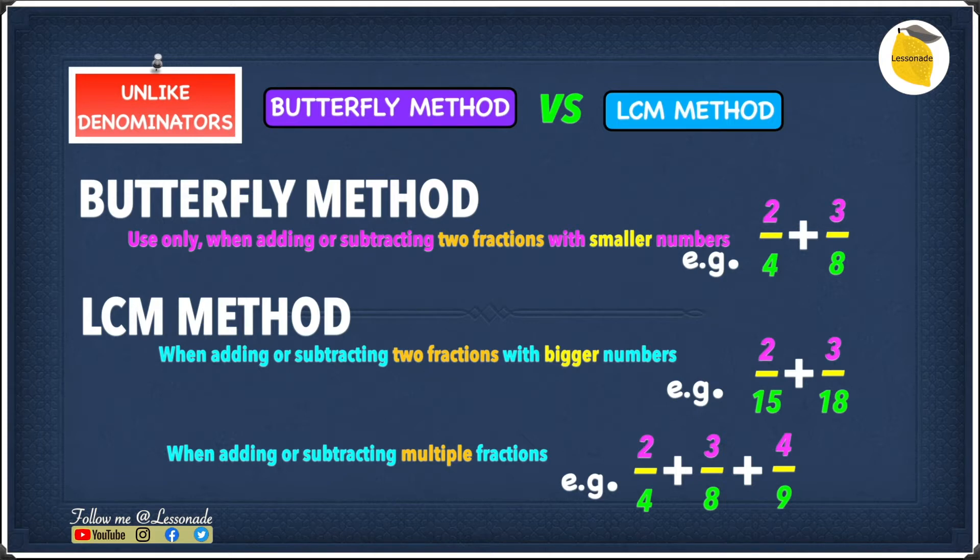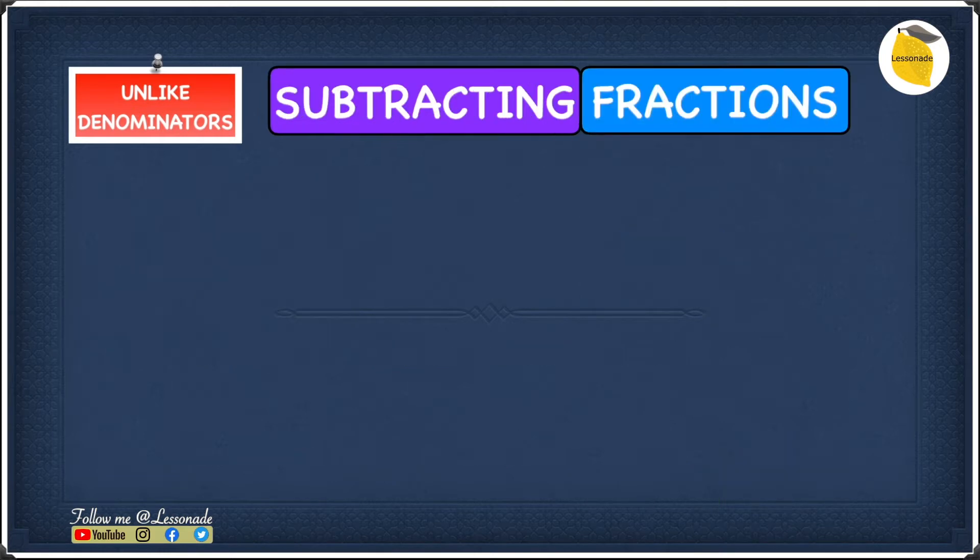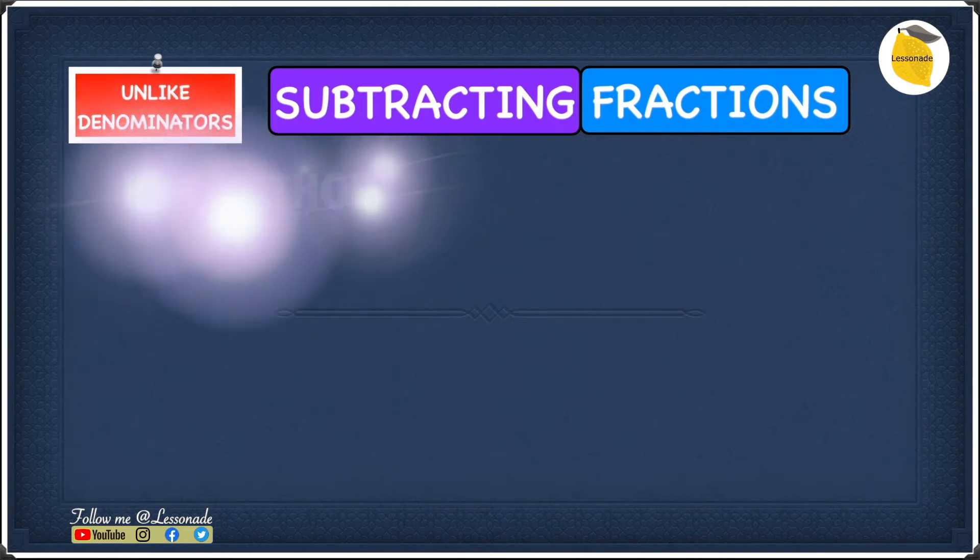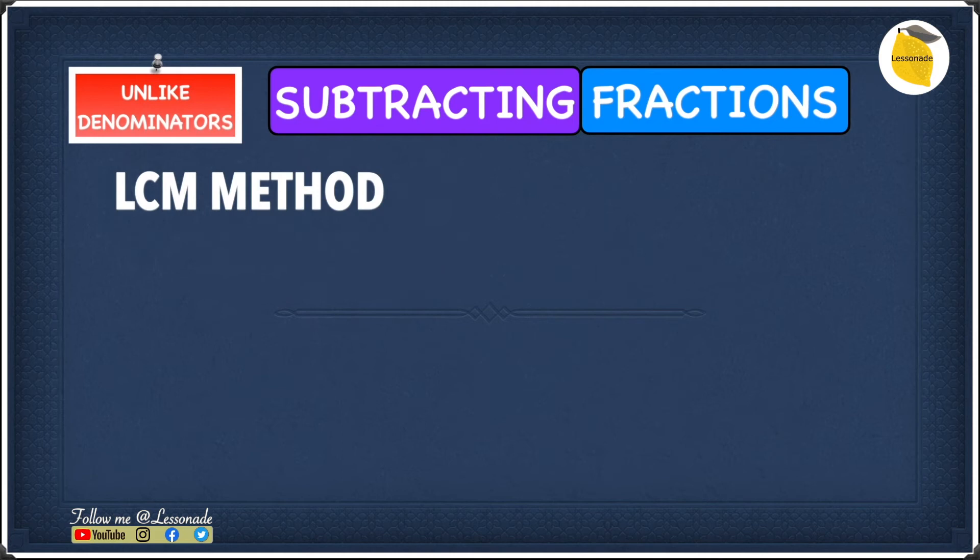For example we have two over four plus three over eight plus four over nine. In this example we have multiple fractions but with the butterfly method you can't add more than two fractions. Now let's have a look at subtracting fractions with unlike denominators using the LCM method.